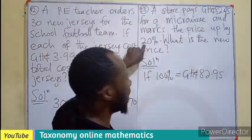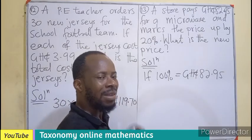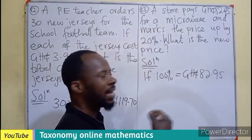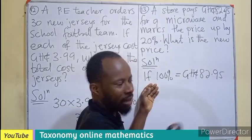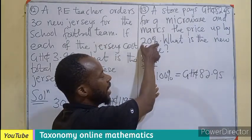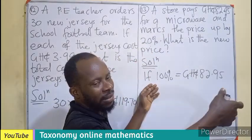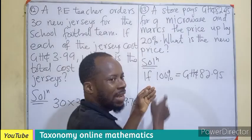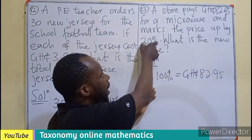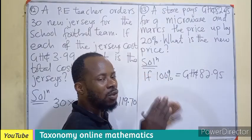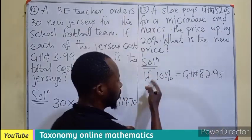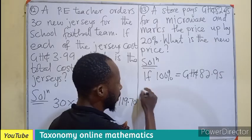Now that the price is increasing, if a customer comes to the store to buy the microwave, you will be paying the cost that you bought it plus the increment that you are intending to get. Meaning you will be paying the 100% and still be paying the 20%. Meaning 120% is what the customer will pay.